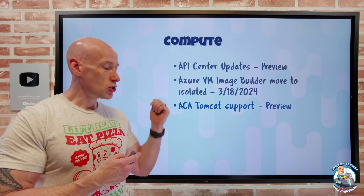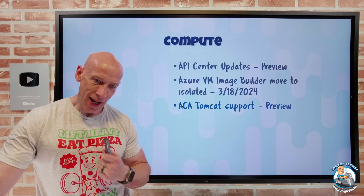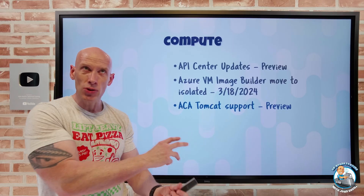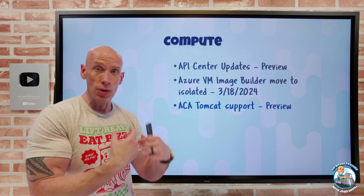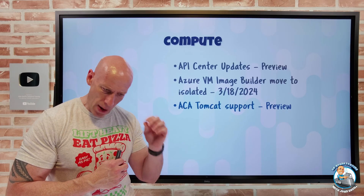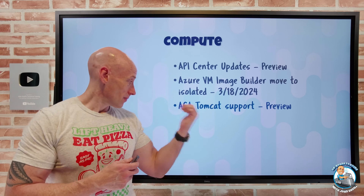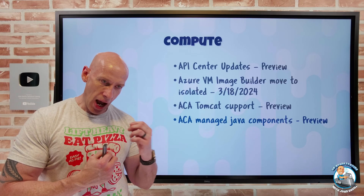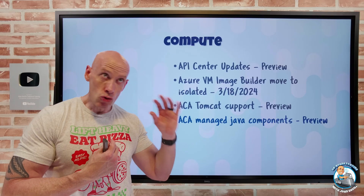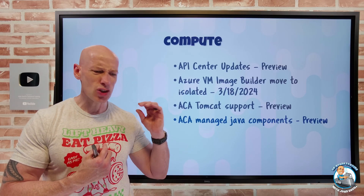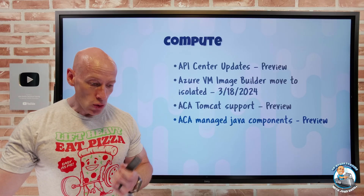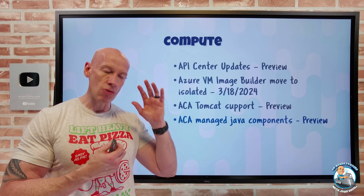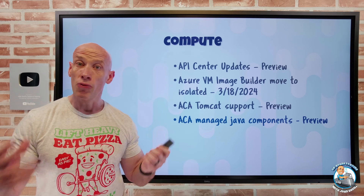Azure Container Apps now supports Tomcat. With Apache Tomcat support, instead of having to take your Java app and use Docker to create a container image, you can now just take a WAR file — that web application archive — and run it directly on Azure Container Apps. We also now have managed Java components: Spring Cloud Eureka, Spring Cloud Config Server for service registrations and externalized app settings, plus improved JVM memory defaults for better performance and reliability.